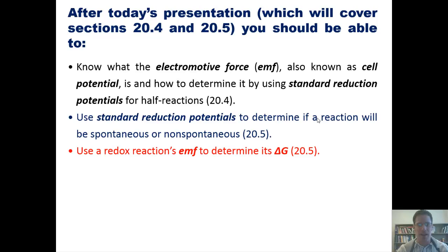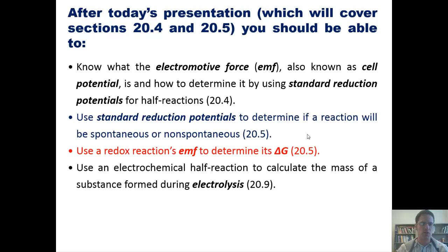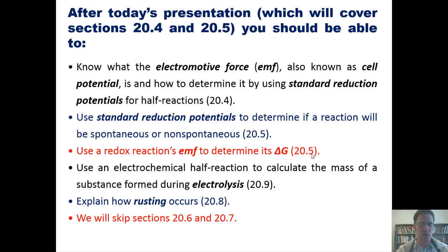Third, use a redox reaction's EMF to determine its delta G. Fourth, use an electrochemical half-reaction to calculate the mass of a substance formed during electrolysis and explain how rusting occurs. Please note, by the way, that we'll skip Sections 6 and 7 from our text. That's the lineup, so let's get started.